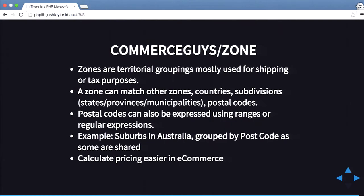Another one is called Commerce Guys Zone. Zones are territory groupings you mostly use for shipping and tax purposes. You can group up a whole bunch of different areas and call that a zone. For example, you can do suburbs in Australia — multiple suburbs have the same postcode, so you can group all those suburbs up. Say you want a zone to have $10 shipping or another zone to have $20 shipping — you can do that on a per-suburb basis, which makes calculating and pricing easier for shipping in e-commerce.